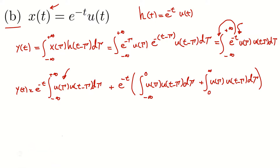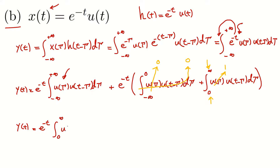In the first integral, τ ranges from minus infinity to zero, so u(τ) = 0, making that entire integral zero. In the second integral, τ is in the range zero to infinity, so u(τ) = 1. Therefore, y(t) equals e^(-t) times the integral from zero to infinity of u(t - τ) dτ.